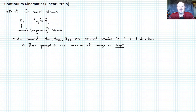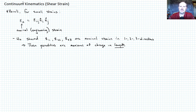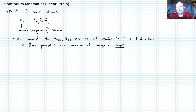For this lecture we want to talk about shear strain. Previously we've talked about nominal or engineering strain. Recall that for small strains, the nominal engineering strain — which is delta L over L — can be given as the small strain tensor epsilon_ij times unit vector n_i and unit vector n_j. We showed that epsilon_11, epsilon_22, and epsilon_33 are the nominal strains in the 1, 2, and 3 directions respectively, measuring change in length.